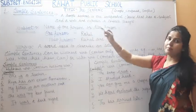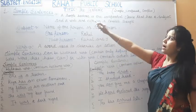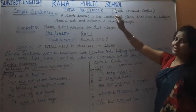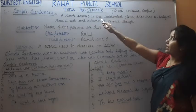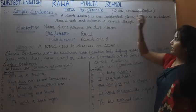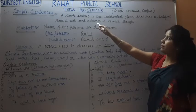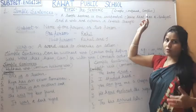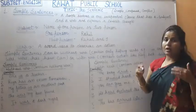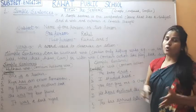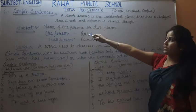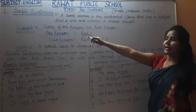What are simple sentences? A simple sentence is one independent clause that has a subject and a verb and expresses a complete thought. The complete thought is expressed. So in a simple sentence we write subject and verb.